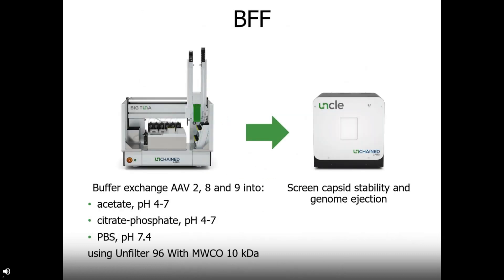To set up this experiment, we used BigTuna to buffer exchange those three serotypes 2, 8, and 9 into a variety of buffers spanning a range of pHs, in a 96-well format plate with a 10 kilodalton molecular weight cutoff filter. After that buffer exchange, we then read those samples on UNCLE to screen for their impact on capsid stability and genome ejection.